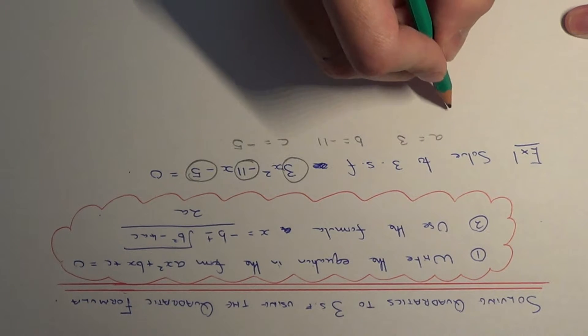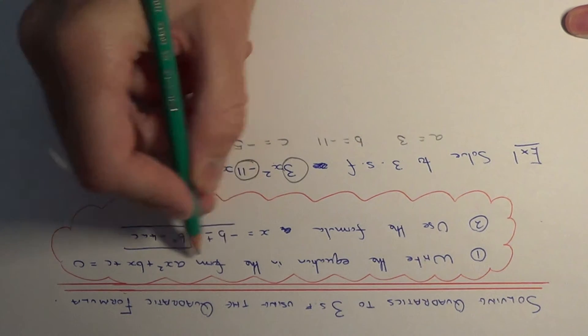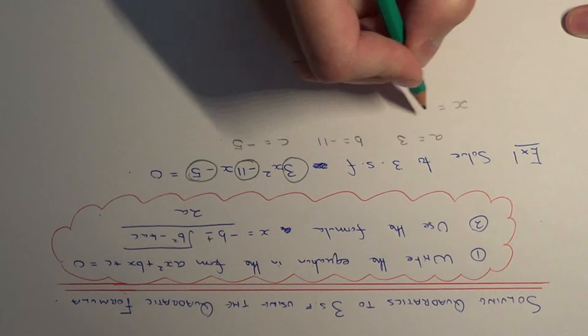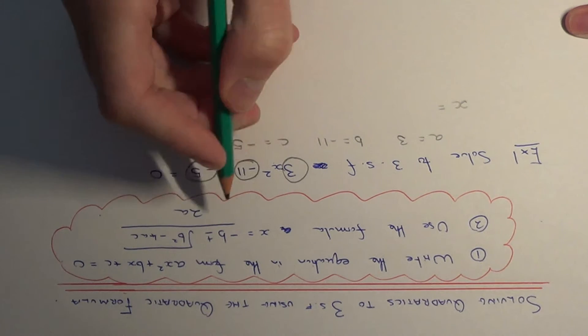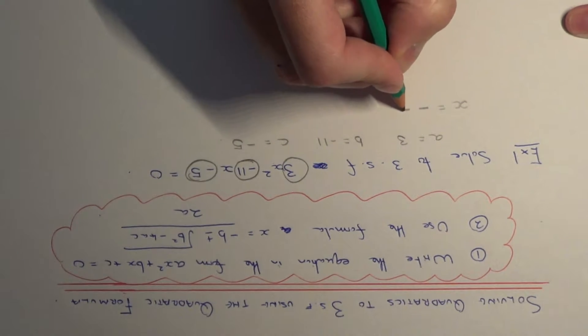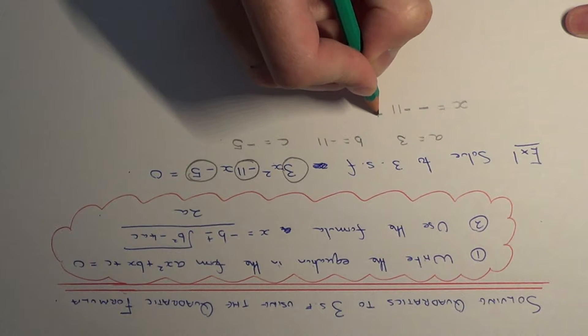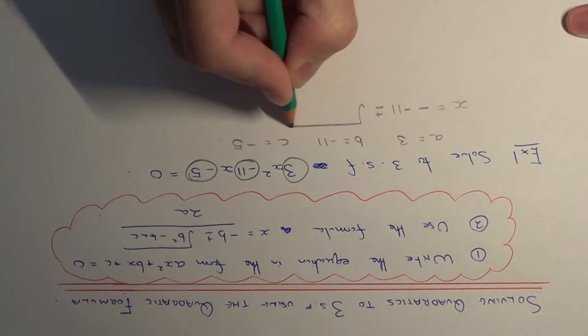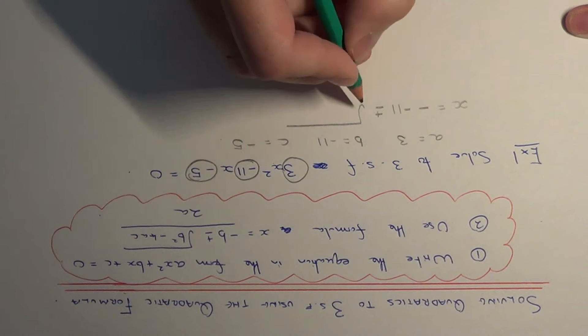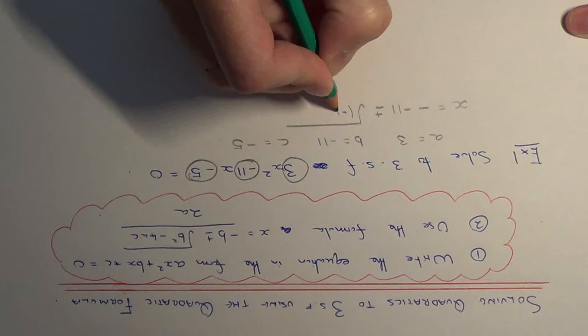Now we just need to substitute these numbers into the formula above. So x equals minus b, which is minus minus 11, plus or minus the square root of b squared, which is minus 11 squared.